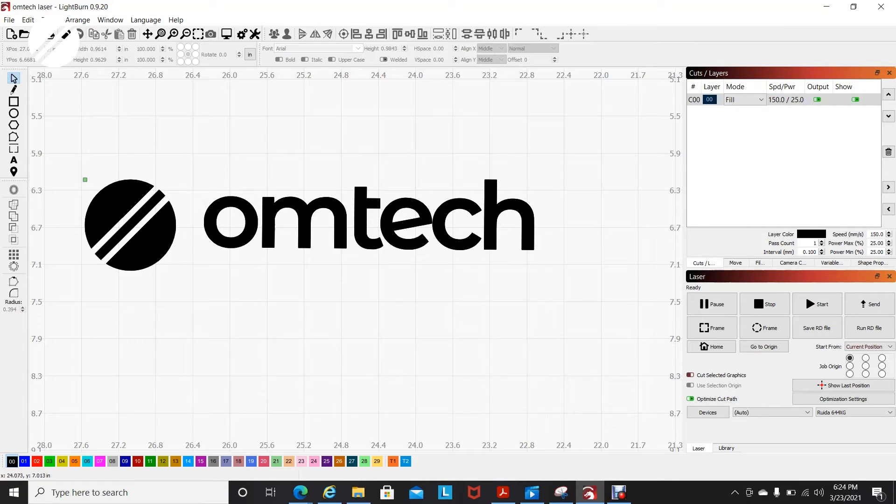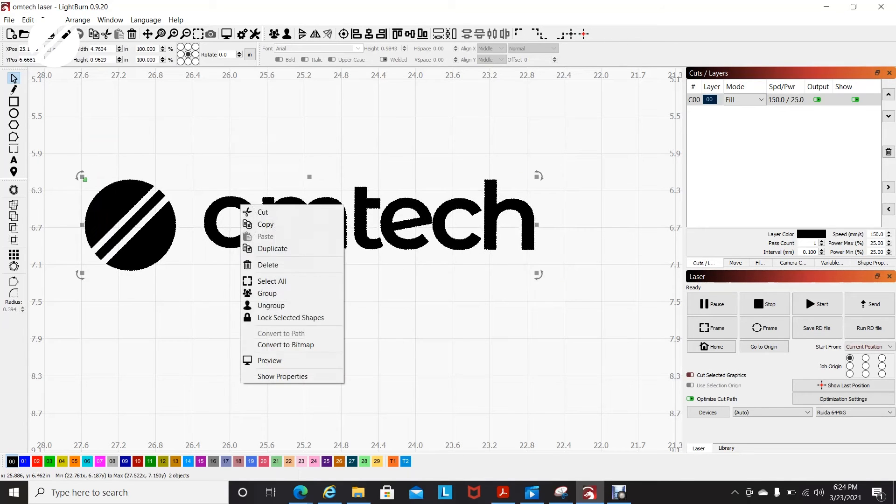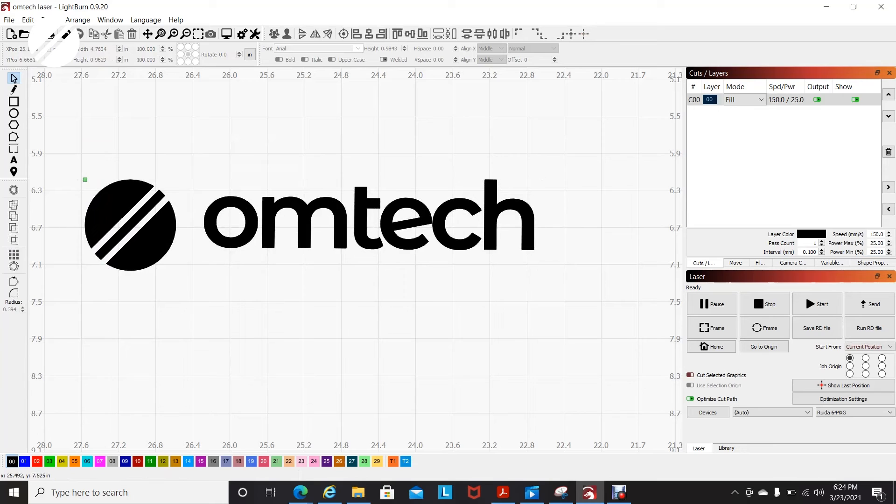Here I'm just going to modify our logo. I am going to ungroup it in order to modify our circular logo. I will then group it again, and then I would be able to rotate it.